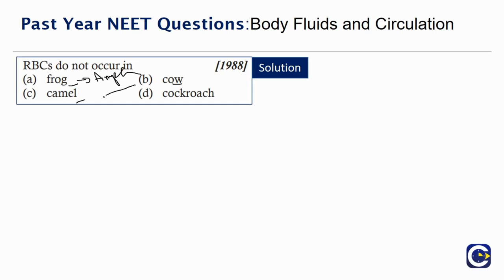Cow and Camel are Mammals. Cow and Camel come under Mammals. Frogs come under Vertebrates, but Cockroach comes under Arthropoda.